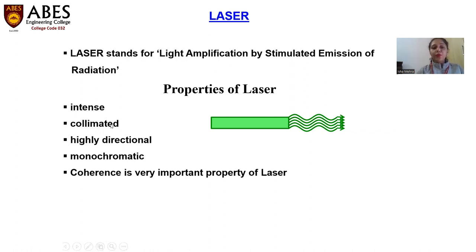When we talk about collimated, we can say that all the light rays, all the photons, they are following the parallel manner. They are running in the parallel manner. That's why it's said to be collimated.